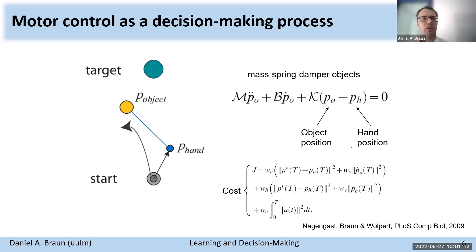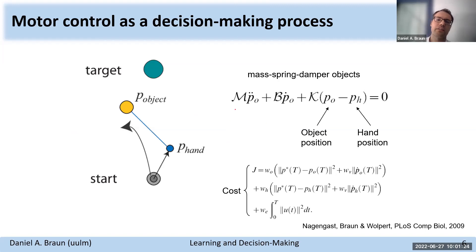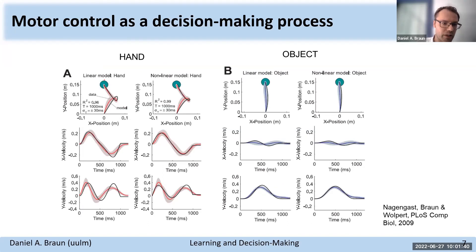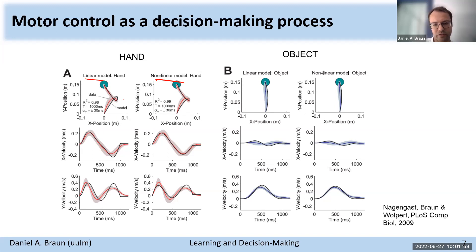Here's another example using optimal control models to understand human motor behavior. I was part of this project where we modeled the control of complex mass-spring-damper objects that could move in unusual directions. We used an optimal controller that minimized control effort and endpoint accuracy. As you can see in this example plot, the model is able to reproduce subjects' movements not only for one object but also for different kinds of objects, as you can find in the paper.